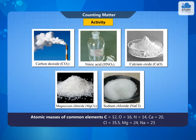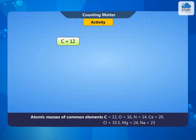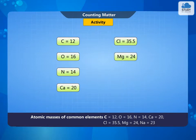Atomic masses of common elements: carbon = 12, oxygen = 16, nitrogen = 14, calcium = 20, chlorine = 35.5, magnesium = 24, sodium = 23.